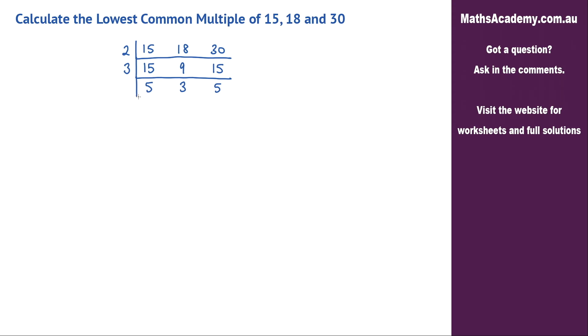Another L. Now we've got 3 as a factor again. 3 won't go into 5, so we'll just write the 5. 3 goes into 3 once. And 3 doesn't go into 5, so we'll just write the 5.